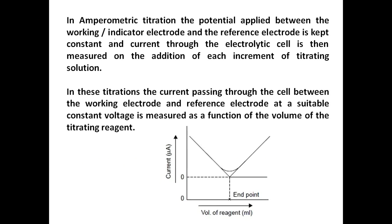In amperometric titration, the potential applied between the working electrode (the indicator electrode) and the reference electrode, such as a calomel electrode, is kept constant. The current through the electrolytic cell is then measured on the addition of each increment of titrating solution. The potential is set to a value where a reduction reaction occurs at the electrode surface, and as the reagent is added, the concentration of the analyte varies, causing a change in current.